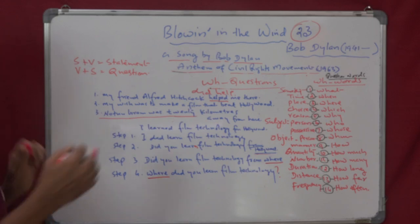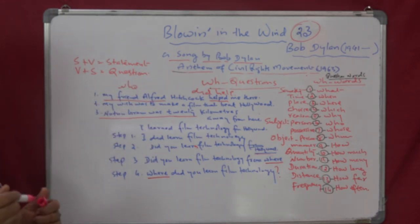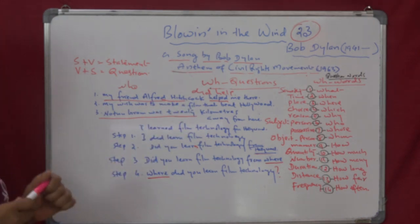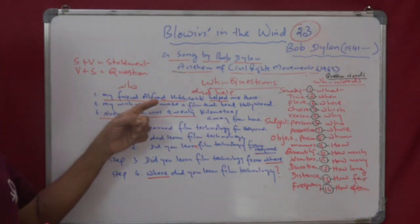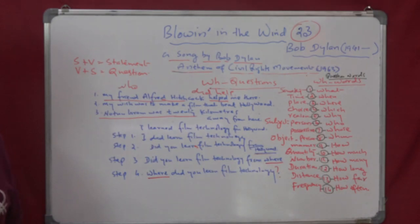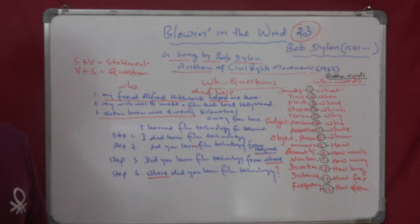So, my friend will become who. Instead of my friend, who? My friend Alfred Hitchcock. Then the next will be did help me there, who? And the next will be, at the beginning, it will be who did help me, will become you, there. Who did help you there? Then answer is, my friend helped me there.